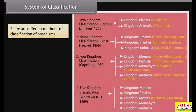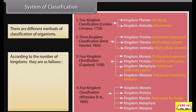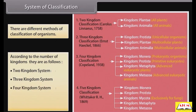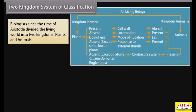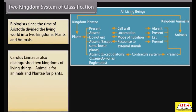There are different methods of classification of organisms. According to the number of kingdoms, they are: Two Kingdoms System, Three Kingdoms System, Four Kingdoms System, Five Kingdoms System, and Six Kingdoms System. Biologists since the time of Aristotle divided the living world into two kingdoms: Plants and Animals. Carolus Linnaeus also distinguished two kingdoms — Animalia for animals and Plantae for plants.